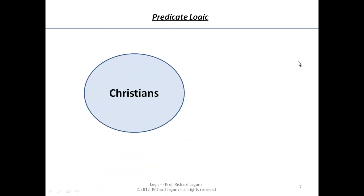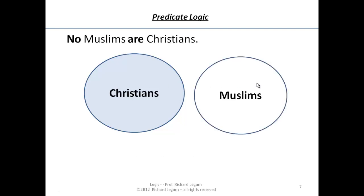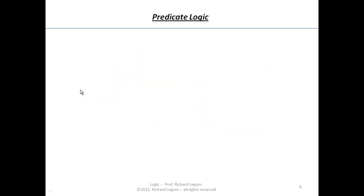Now let's look at the case 'No Christians are Muslims.' Look at the class of Christians represented by that circle. When we say no Muslims are Christians, we're saying look at that class of all the Muslims — they do not overlap in any way. We can see the daylight between them, so nobody who is a Muslim is a Christian. These Venn diagrams are capturing certain facts about the generalizations.